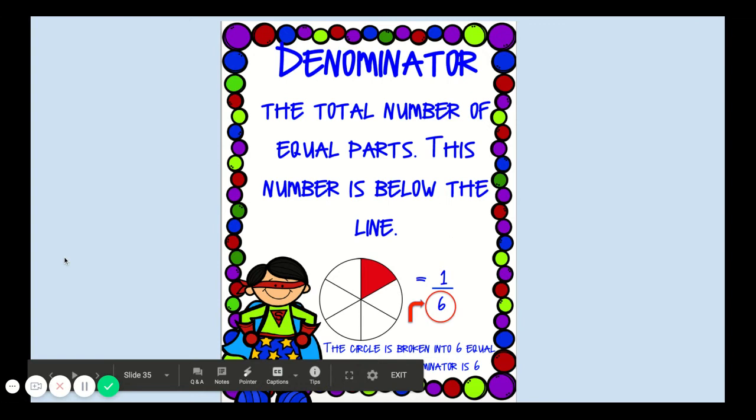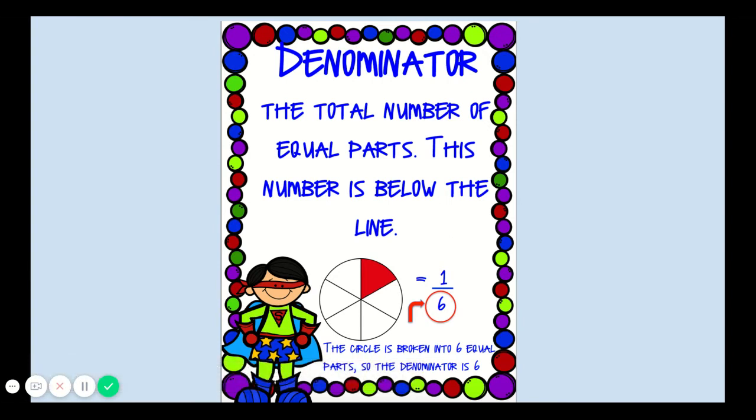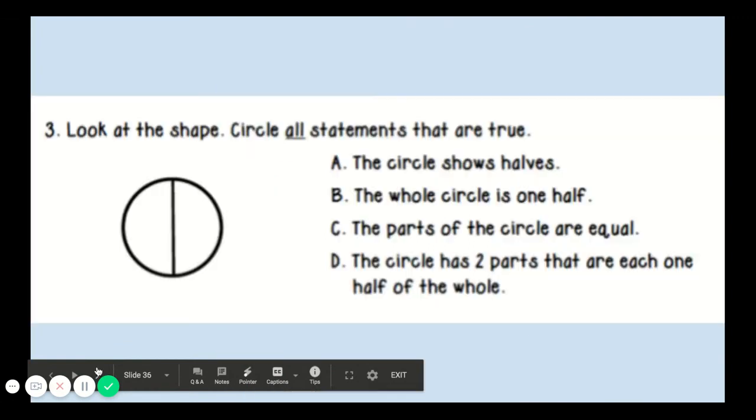The denominator is the total number of equal parts. This is the number below the line. The circle is divided into six equal parts, so the denominator is six.